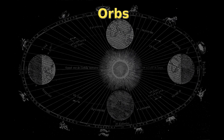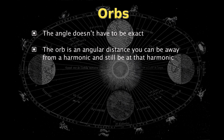Aspects and harmonics don't need to be exact — this is the concept of orbs. Think of tuning a radio: you can be a little bit off the station you're listening to and still get the signal. Admittedly it may have some static, but as you get closer and closer, the signal gets clearer. The same applies with orbs — it's the angular distance the planets can be away from a harmonic and still be considered to come together as that harmonic.